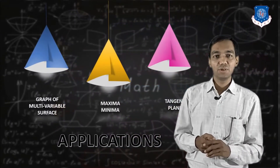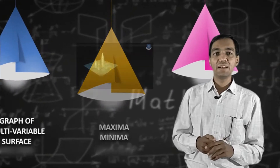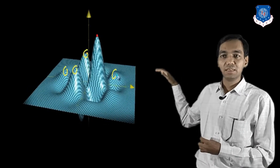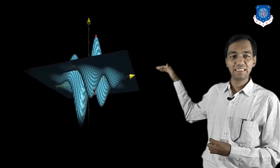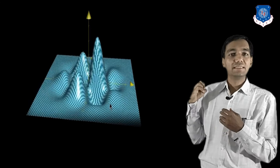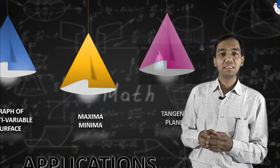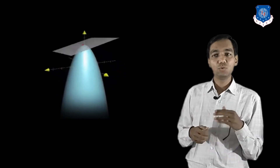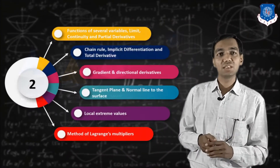The first application of partial derivatives is learning how to draw the graph of a multivariable function — in three dimensions you get a curve or surface. The second application is finding extreme values: maximum peaks are maximum values and bottom peaks are minimum values. The third application is finding the tangent plane at any point — in 2D you have a tangent line, in 3D you have a tangent plane and the normal to the surface at a point.